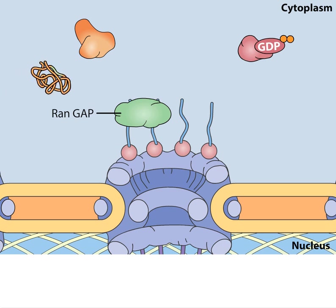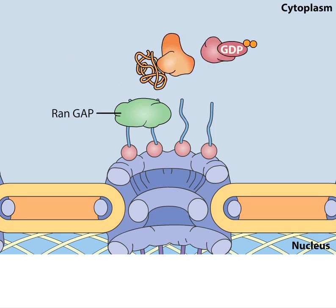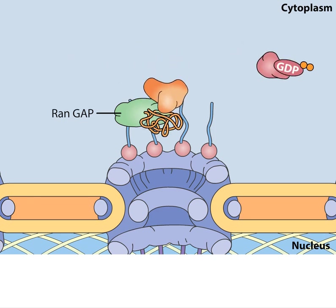RAN plays a key role in protein import and export. Note that while RAN is bound to GDP, it cannot disrupt the binding of importin to a cargo protein.